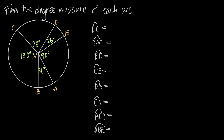In this video we're talking about how to find the degree measure of an arc given central angles of a circle. When we're talking about arcs, we're talking about the length along the circumference or perimeter of a circle. The degree measure of an arc is always going to be the same as the degree measure of the corresponding interior angle.